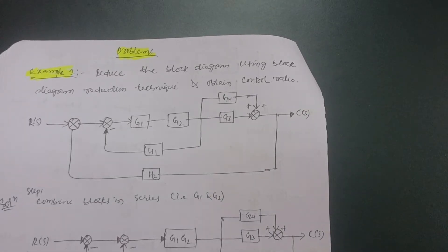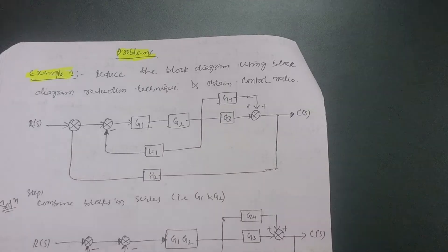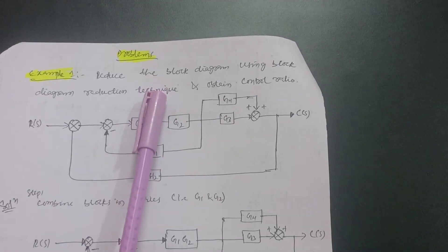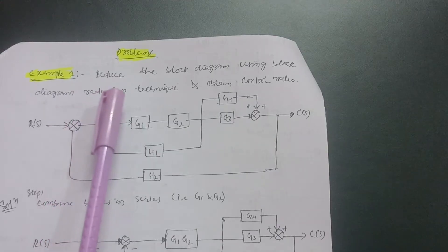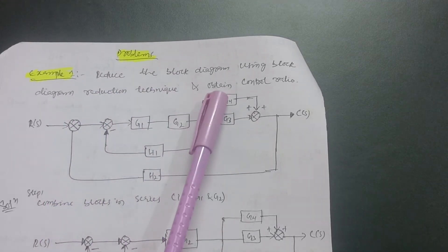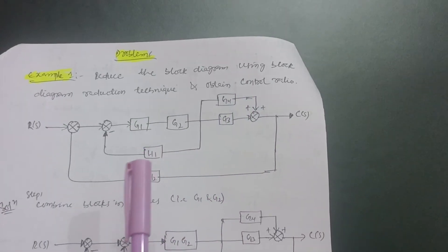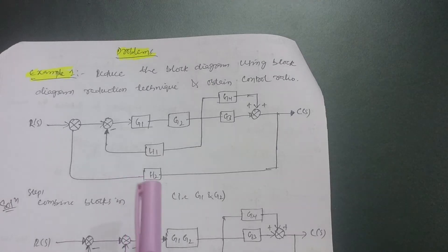Welcome back to my new lecture of control engineering. As you already know, in the previous lectures I have discussed the rules of reducing block diagrams. Now I am with the problem solving video. Let us take the example here — the problem: reduce the block diagram using the block diagram reduction technique and obtain the control ratio, that is the transfer function.